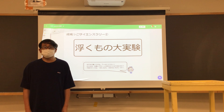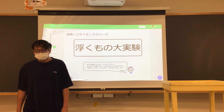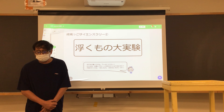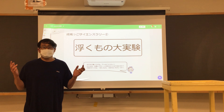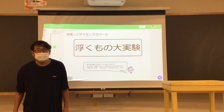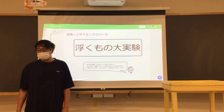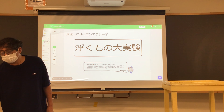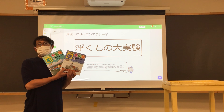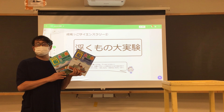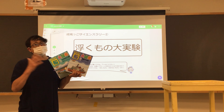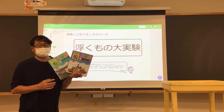はい、こんにちは。ふるふるです。今回の実験は「浮くもの大実験」です。まだまだ暑いですよね。プールに入ったら、人間ってぷかって浮いたり、沈んだりするじゃないですか。それから浮くといえば、船とかもありますよね。鉄がなんで浮くんだろうと思ったりする。そういうことにつながっていく実験です。